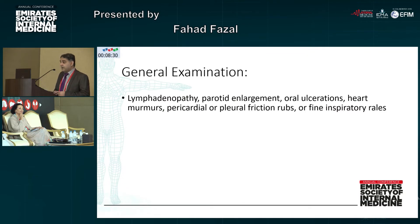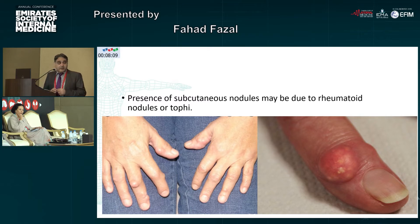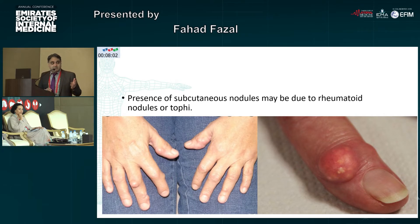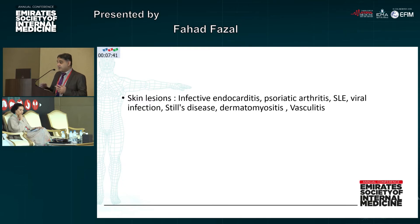Coming to the general examination, look for any lymphadenopathy, parotid enlargement, oral ulcerations, heart murmurs, pericardial friction rubs, or respiratory examination for any crackles. This shows the presence of subcutaneous nodules. The picture on the right is a gouty tophus — you can see the yellow color and crystals of monosodium urate. The picture on the left with two hands shows rheumatoid nodules. Skin lesions can suggest underlying infective endocarditis, psoriasis, lupus, viral infections, Still's disease, dermatomyositis, and vasculitis.